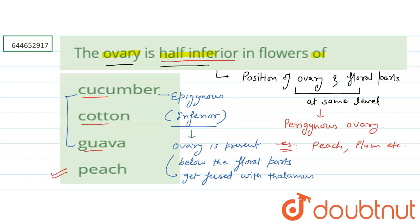In this case, the ovary gets fused with the thalamus. So in cucumber and guava, a perigynous ovary is not present — the epigynous ovary is present.